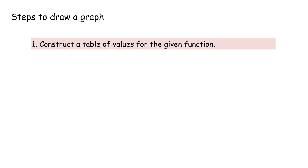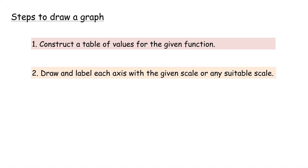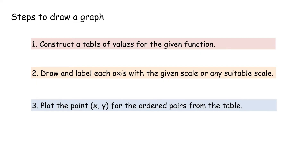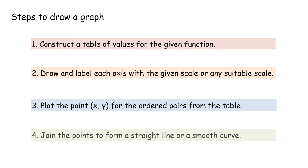Steps to draw a graph: 1. Construct a table of values for the given function. 2. Draw and label each axis with a given scale or any suitable scale. 3. Plot the points (x, y) for the ordered pairs from the table. 4. Join the points to form a straight line or a smooth curve.